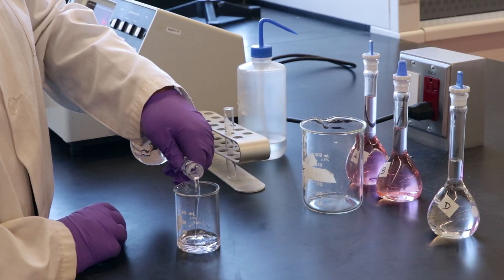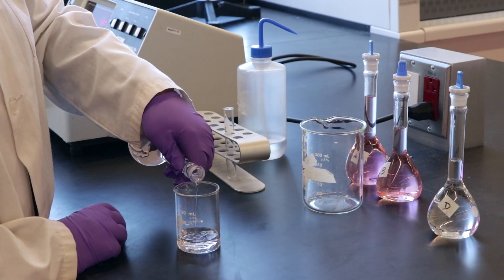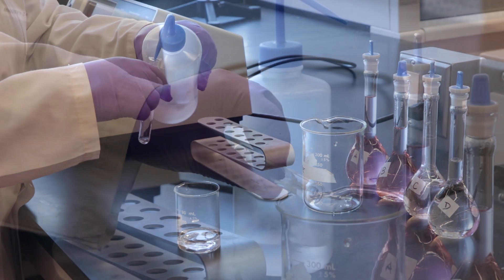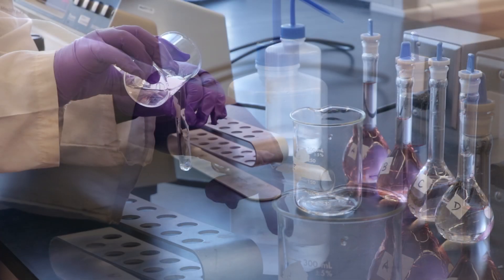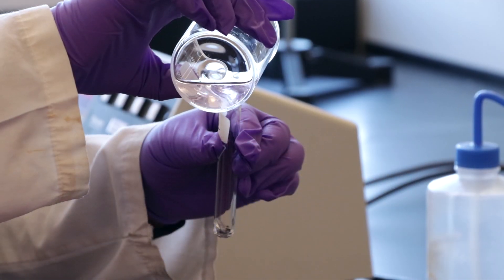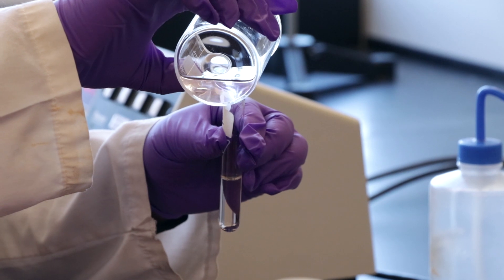Next we have to rinse the cuvette. Pour a small amount of the solution to be measured in a beaker. Rinse the cuvette three times with distilled water and three times with the solution you are about to measure. Then fill the cuvette three quarters full with the solution.